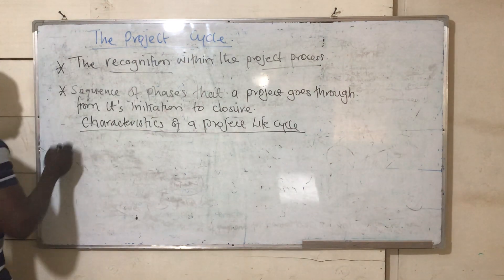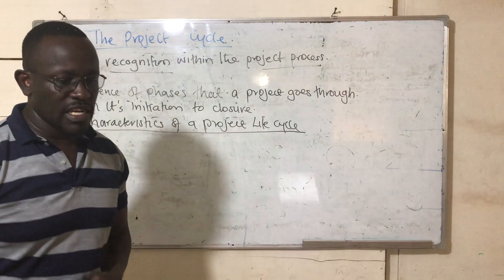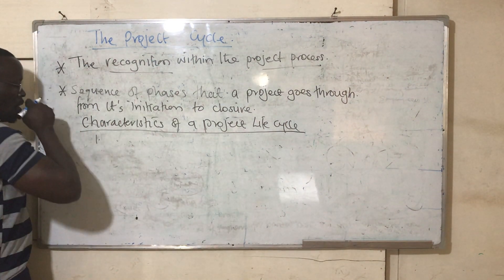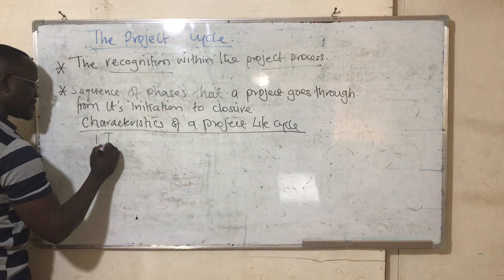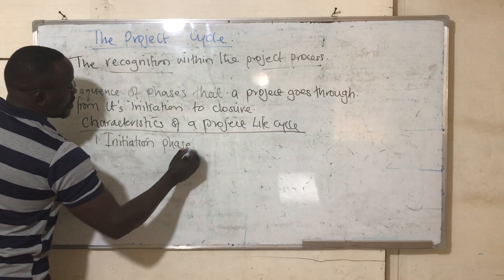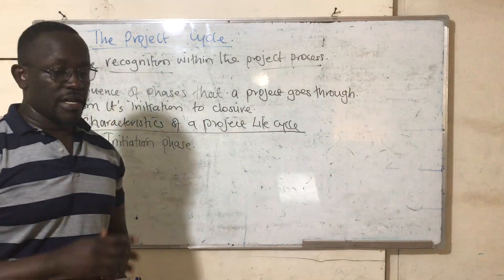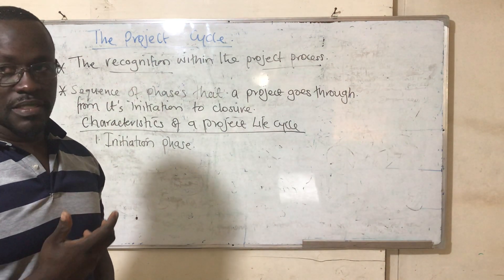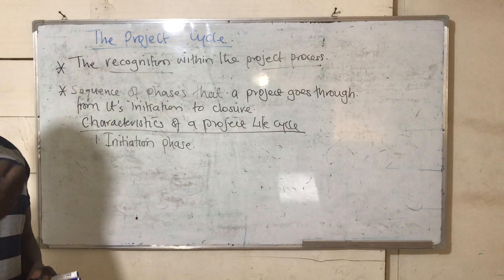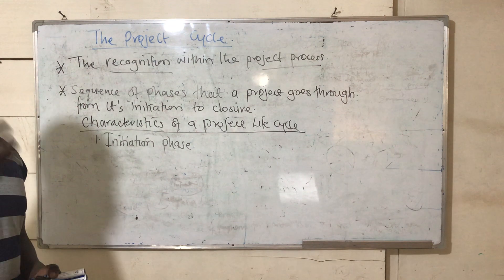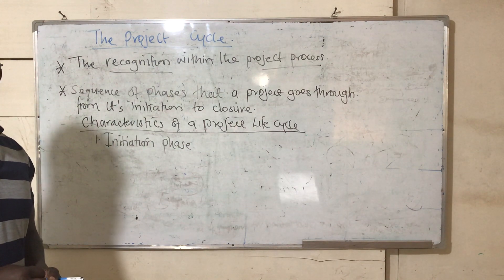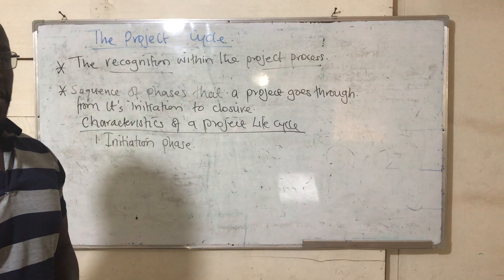What are the characteristics of a project life cycle? These characteristics are better understood when we look at the phases. The first characteristic of a project life cycle is the initiation phase — how do you start the project? What does it take to start the project?